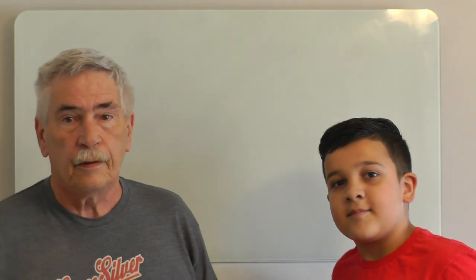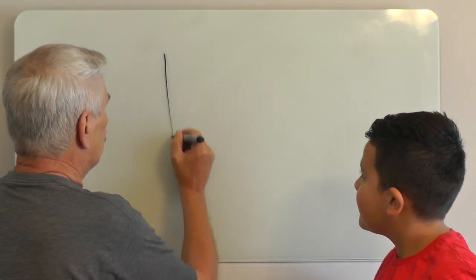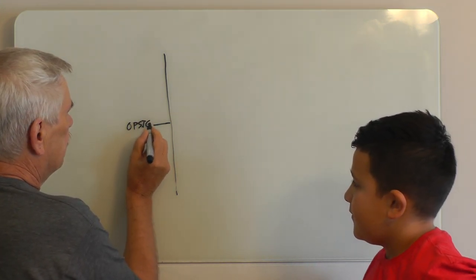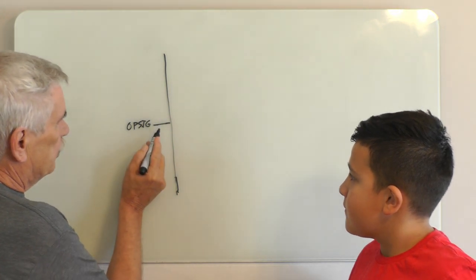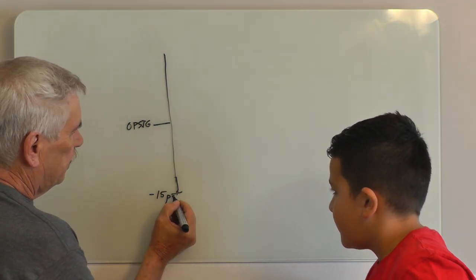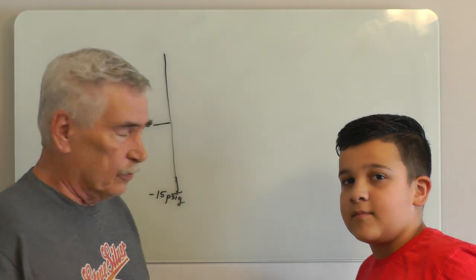Since we're talking about pressure, let's go over that a little bit. Let's talk about gauge pressure. I'm going to draw a line and call this zero PSIG — pounds per square inch gauge. Anything below this line is going to be a vacuum, so down here we'll call this minus 15 PSIG. Atmospheric pressure is about 14.7 PSI at sea level, but for our math and a lot of these transducers, especially absolute pressure transducers, they're calibrated to use minus 15 PSIG, or zero PSIA — absolute pressure.